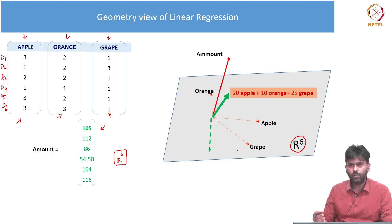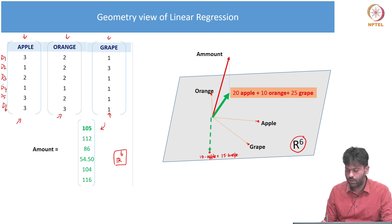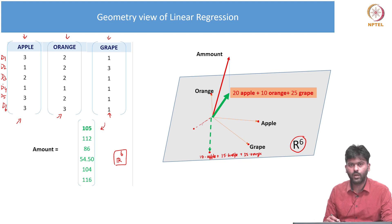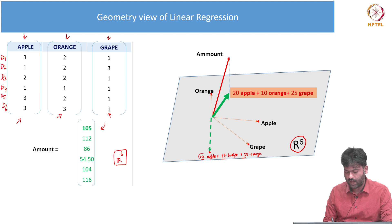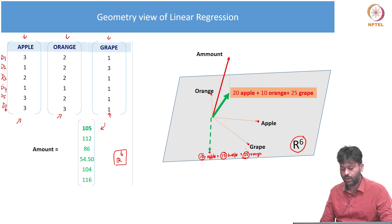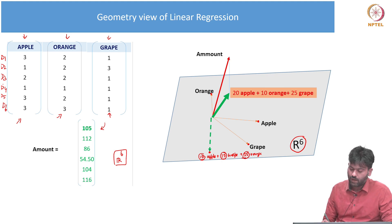This is another vector. For example, this is one point — maybe apple is 10, 10 into apple, plus 5 into grape, plus 30 into orange. This is another point. On the left, this is another vector. On the right, this is another vector. The six-dimensional space has another vector that is different.